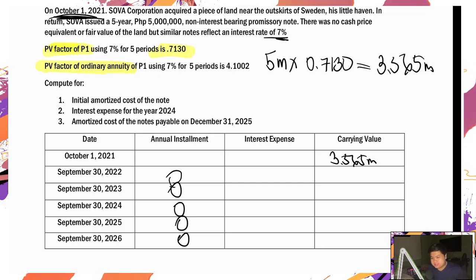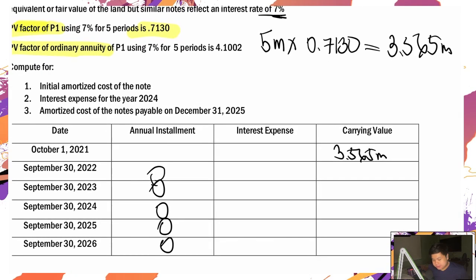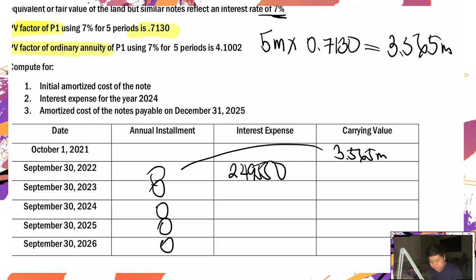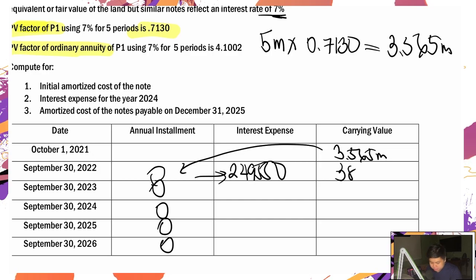So complete ka ng interest expense. 3,565,000 times 7% — that's 249,550. Minus 0, so ang lalabas ay 3,814,550.